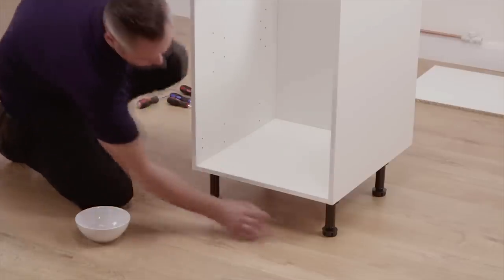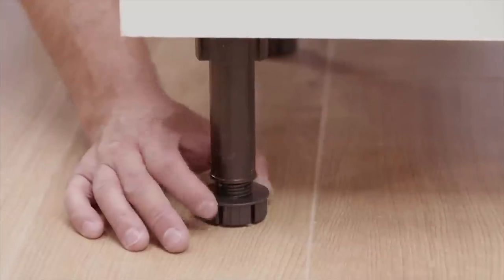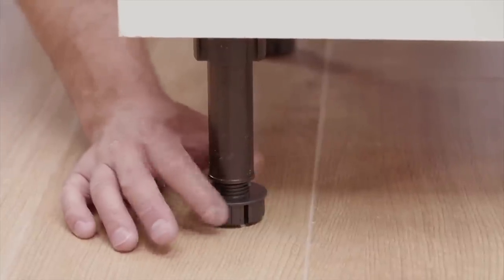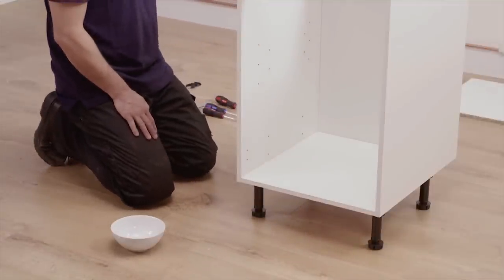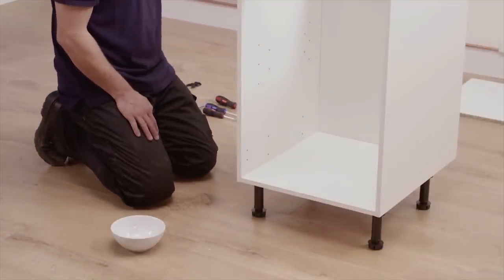To make the cabinet level and the right height, you can adjust each individual leg. Twisting the base of the legs will extend or reduce them, increasing or decreasing the height up to a maximum of 140mm.